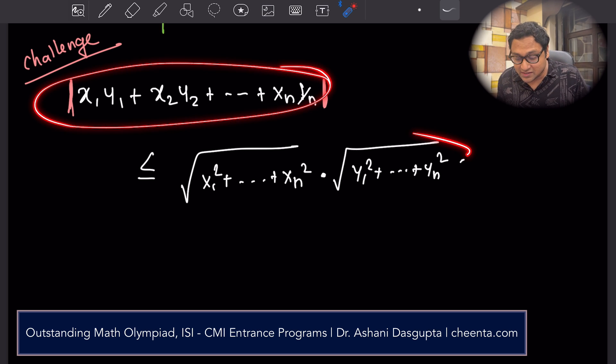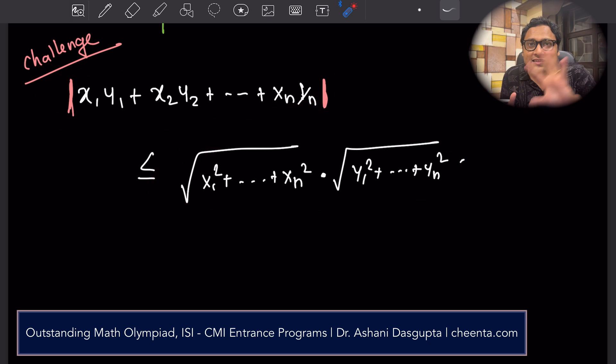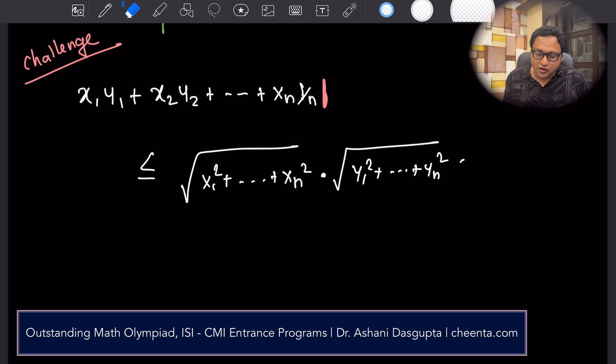This is also positive. This is also positive. Now you say, okay, left hand side is smaller than or equal to right hand side. It's a harder problem to solve. So the challenge is how can you prove that the absolute value of the dot product is less than or equal to the product of the magnitude.